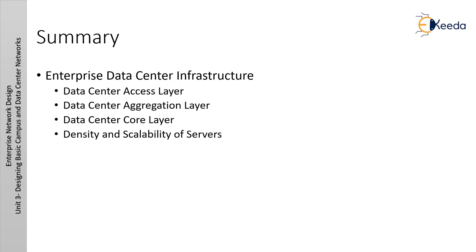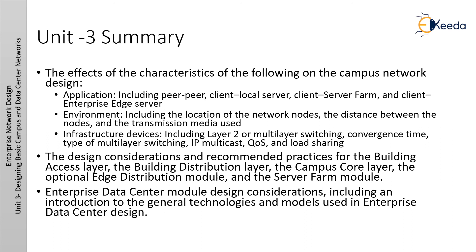In this lecture we have discussed enterprise data center infrastructure, data center access layer, data center aggregation layer, data center core layer, and density and scalability. In Unit 3, we covered the effect and characteristics of the following on campus network design: application environment and infrastructure — including peer-to-peer, client local server, client server farm, and client enterprise — server environment including location of network nodes, distance between nodes, and transmission media used, and infrastructure devices including Layer 2 or multi-layer switching, convergence time, type of modular switching, IP multicast, quality of service, and load sharing.